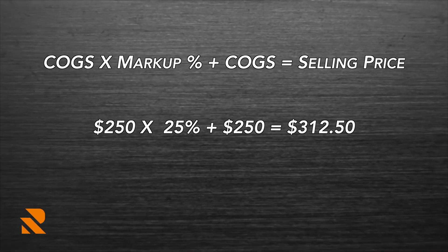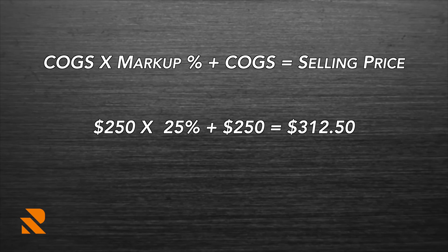The biggest reason why you should care about markup is it allows you to get to your end price faster. If you know your targeted margin, then knowing the related markup percentage just gets you there faster. Let's say you're selling something that costs you $250 and you want to be at 20% margin. Knowing that 20% margin is really 25% markup, you take your $250, multiply by 25%, and that gives you the markup dollar figure. Add that back to COGS and that gets you your end result.